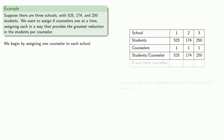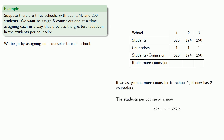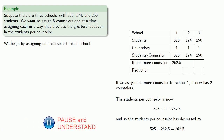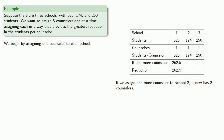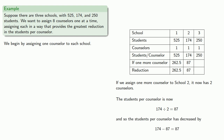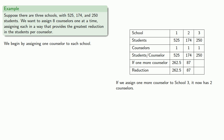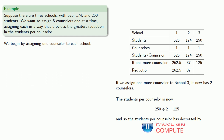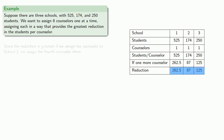If we assign one more counselor to School 1, it now has two counselors and the students per counselor will decrease by a certain amount. Similarly, if we assign one more counselor to School 2, it now has two counselors and the students per counselor decreases. We do a similar computation for School 3. Now we look at our reductions — since the reduction is greatest if we assign the counselor to School 1, we assign the fourth counselor there.